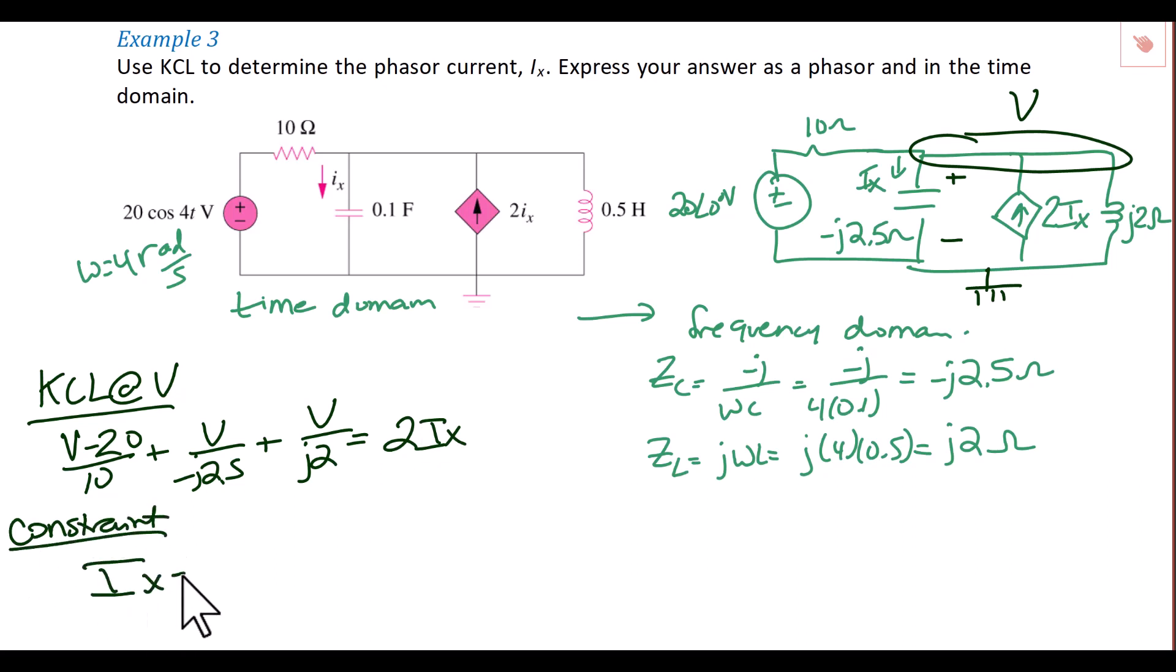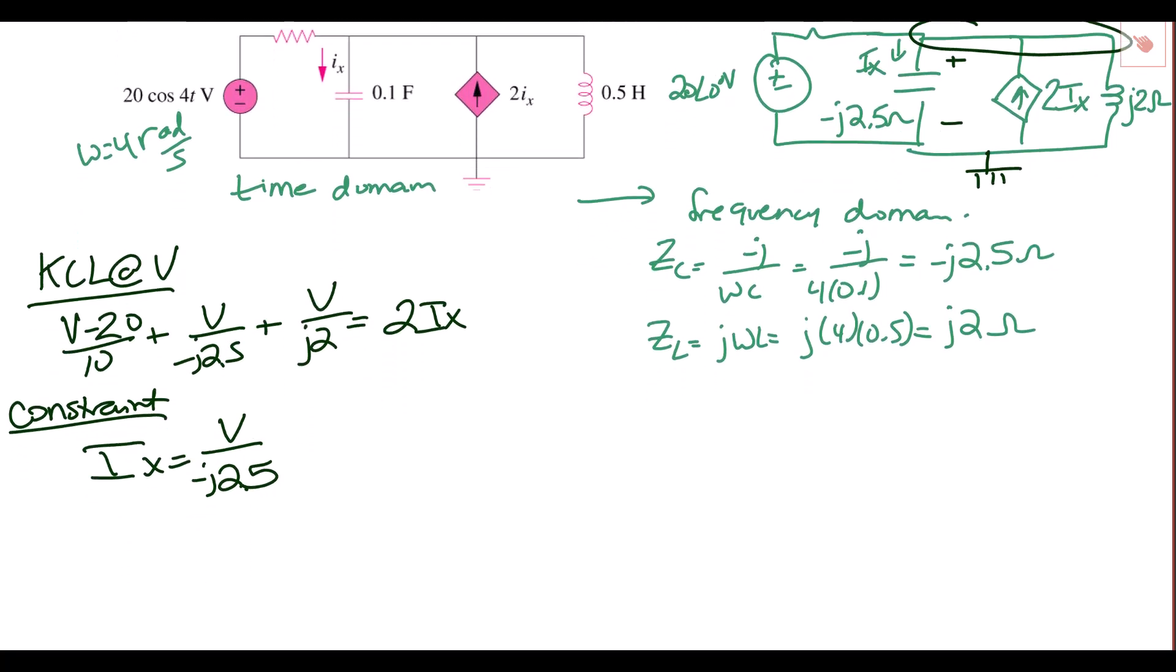Our constraint based upon our dependent source is that IX is equal to V over negative J 2.5. So you would then substitute equation 2 into equation 1 to solve for V.